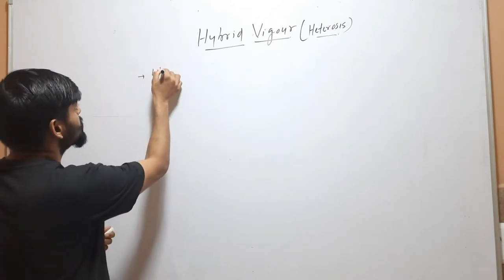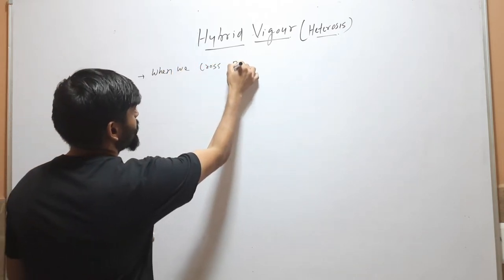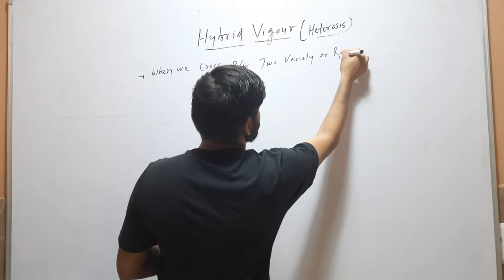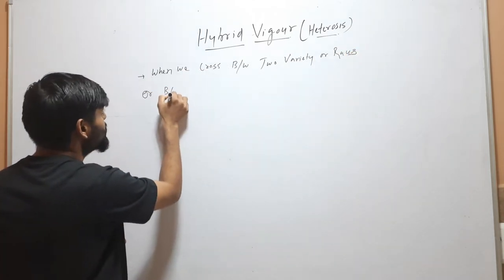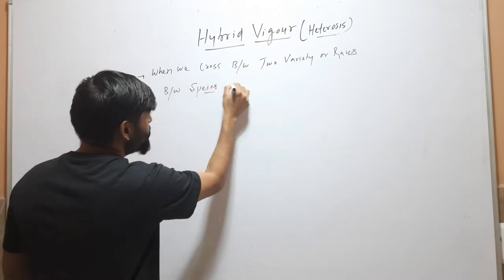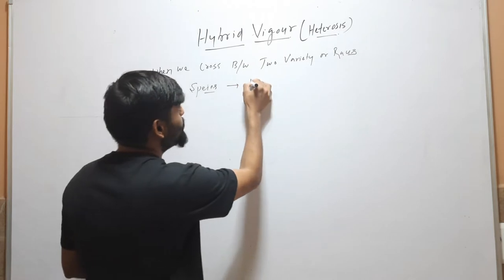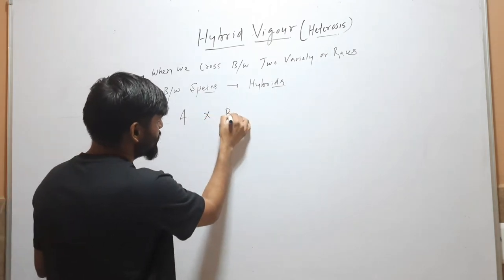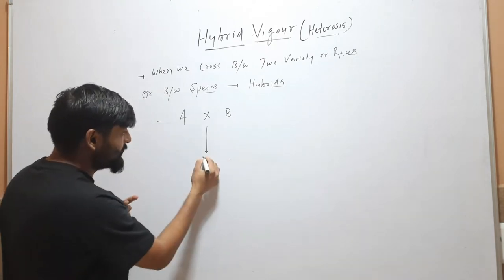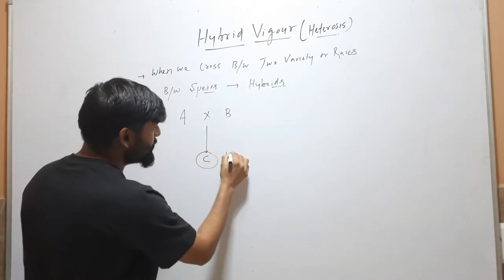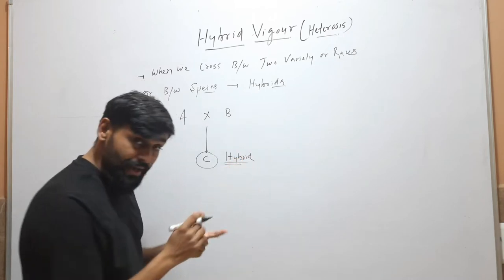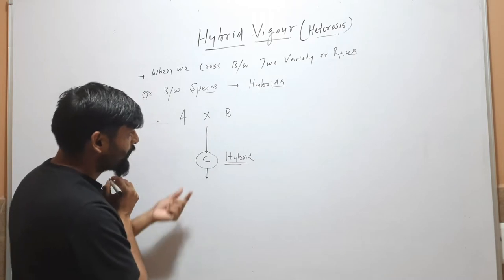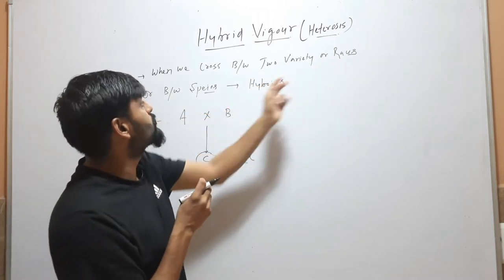When we cross between two varieties, races, or between two species, what do we obtain? We obtain hybrids. Suppose when we cross between A and B, the progeny — suppose C — will be hybrid. Hybridization may occur between plants and also between animals. This hybrid may be of two varieties, two races, or two species.